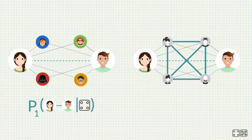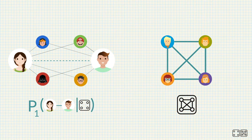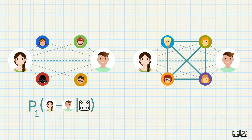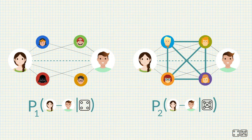In another scenario, Alice and Bob again have four friends in common. But this time, all of these common friends know each other. In this scenario, we're interested in the probability of Alice and Bob dating, given four common friends who all know each other.